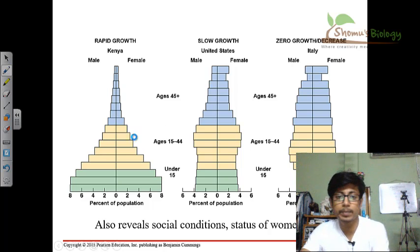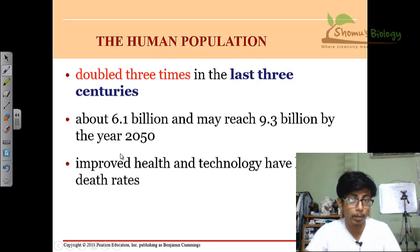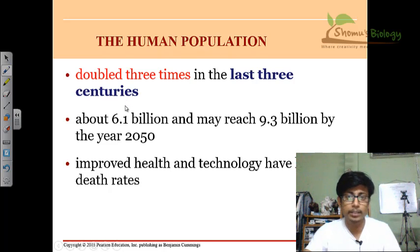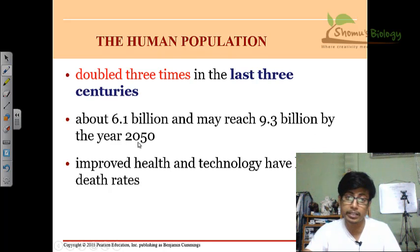This age structure diagram plays a vital role — it gives us insight about populations. We are especially interested in age structure diagrams for human populations because the human population has doubled three times in the last three centuries, meaning the last 300 years. That is a huge exponential growth — we are at about 6.1 billion now and may reach 9.3 billion by the year 2050.